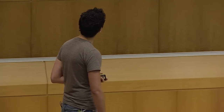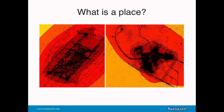So what are some of the questions we can ask of this data? One of the simplest is: what is a place? Here I've taken two famous New York City places and plotted their check-ins on a map. Can anyone guess what the two places are? Central Park on the left, and JFK Airport on the right. It's pretty amazing that without showing you a map, you can recognize these two New York landmarks. For JFK, you can actually make out the terminals, the air tram, and the runways.